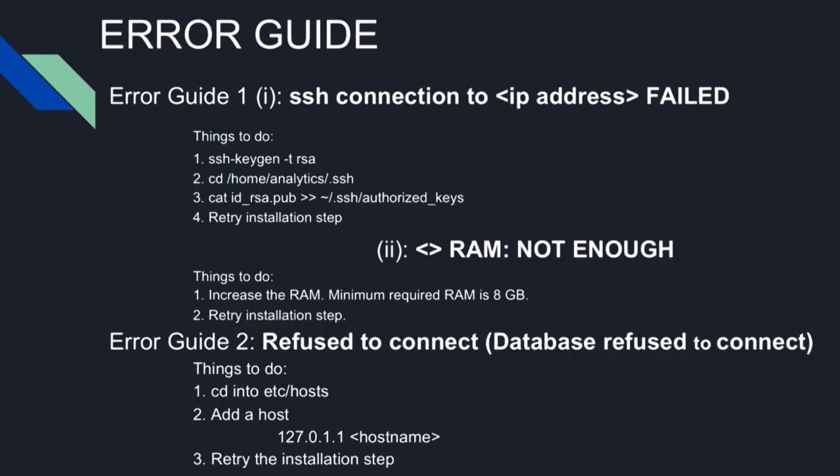We developed an error guide, and the IIT Bombay X team also helped us. The first error was that SSH connection failed — we had to establish the SSH connection. The second was that RAM was not enough: we initially used a local system with 4 GB RAM but didn't check at the start that 8 GB was required. The third error was that the database refused to connect — we had to add a host entry in the /etc/hosts file.